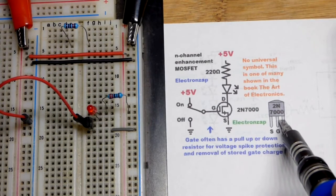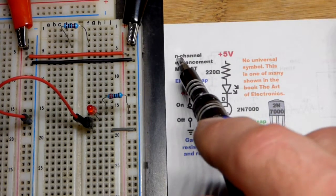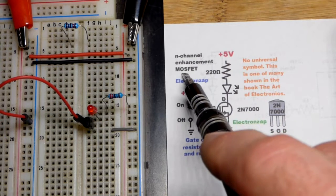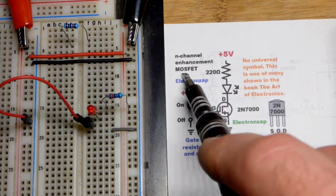So now in this video we're going to look at the 2N7000. It's an N-channel enhancement mode MOSFET right there. MOSFET is the key word.